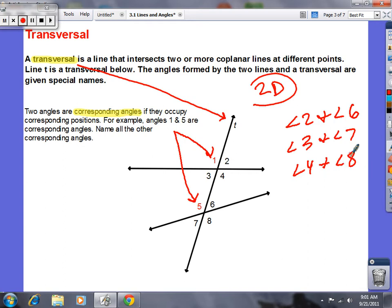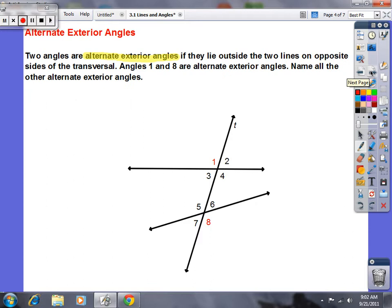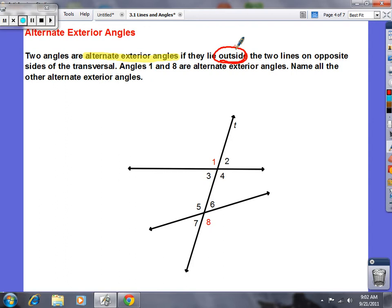So those are all corresponding, they're kind of in the same spots. Make sense? Let's talk about the next one. Let's talk about alternate exterior angles. Alternate exterior angles if they lie outside. You guys circle this, outside. They've got to be outside, so that's kind of like the top or the bottom, and they're on opposite sides. So an example is angle one and angle eight.